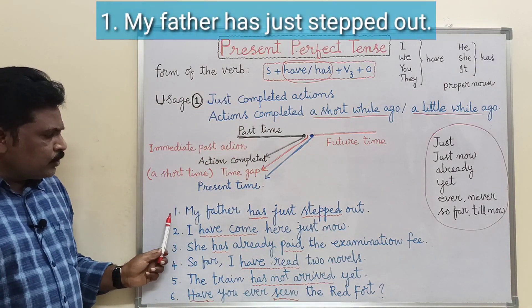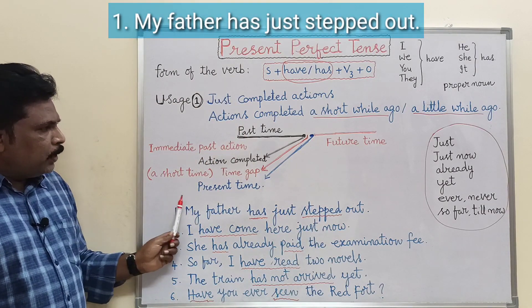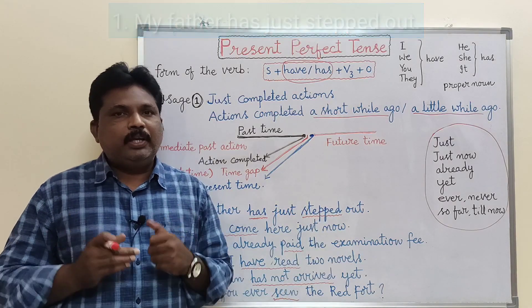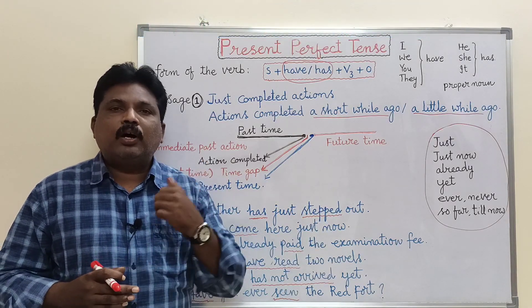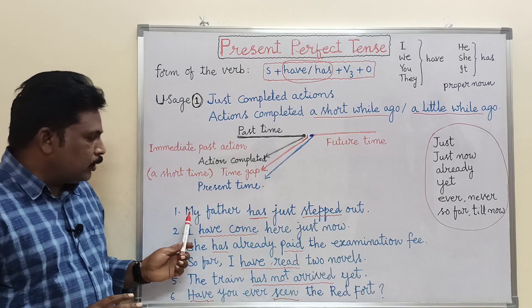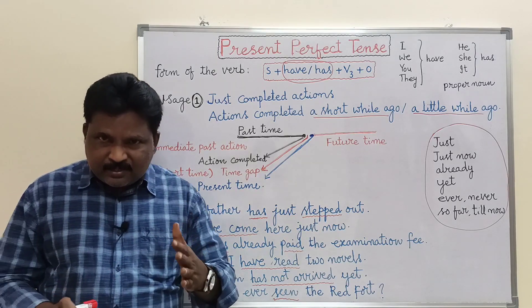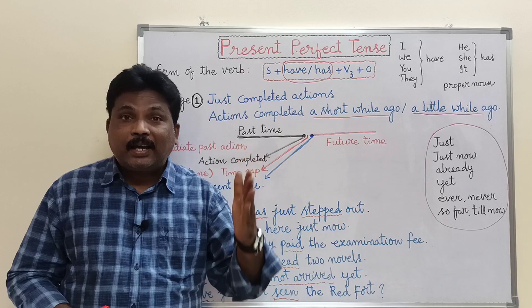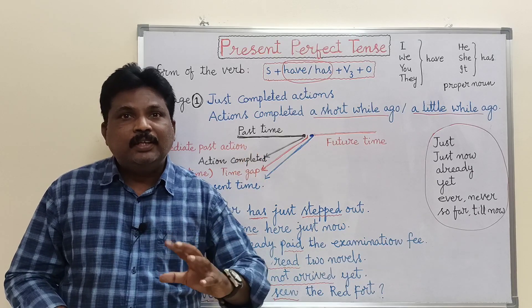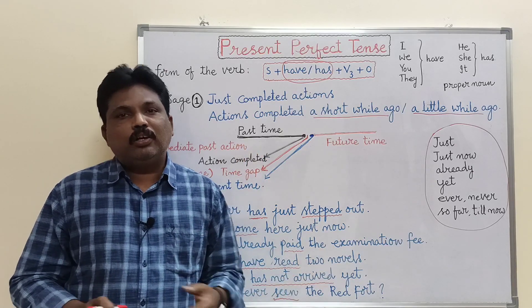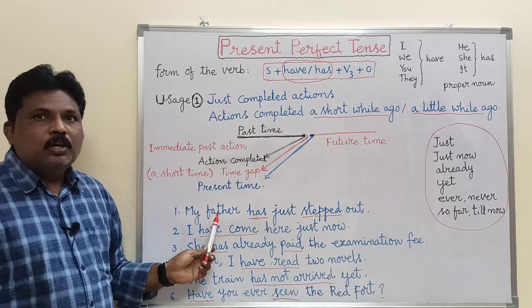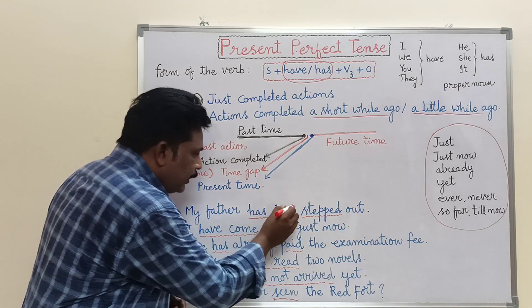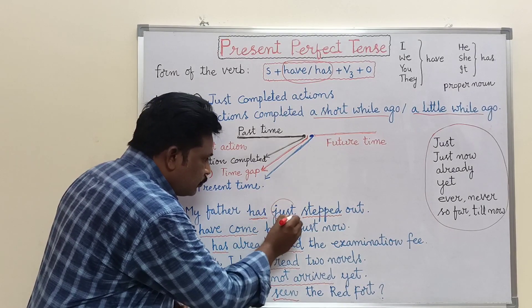First example: 'My father has just stepped out.' If somebody asks 'Is your father at home?', your answer may be 'My father has just stepped out.' The occurrence of the action is a little while ago, a short while ago. The tense used is present perfect tense. The time indicator here is 'just'.